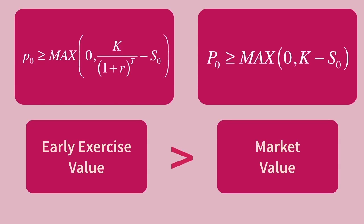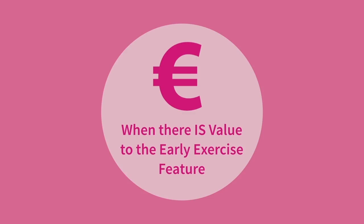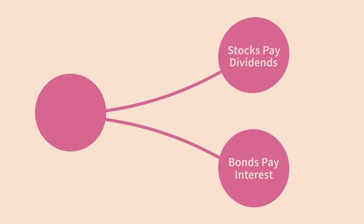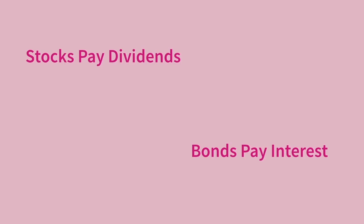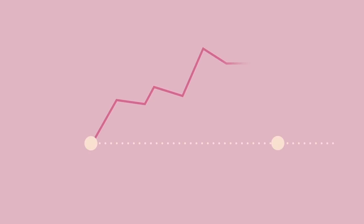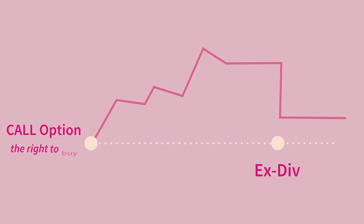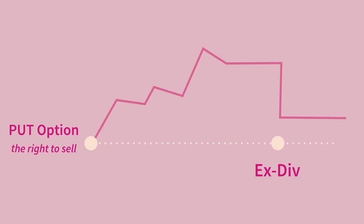Stocks pay dividends, bonds pay interest, and some assets have carrying costs — that is the key. Dividends and interest encourage the early exercise of a call option, while carrying costs encourage early exercise of a put option. When a stock pays a dividend, its price falls simultaneously. With an American call option, we can exercise right before the dividend, buying at the contract price and selling at the market price before the drop eats into profits. For a put option, it would not be worthwhile to exercise early — it is more valuable to wait until after the dividend is paid to capture the price drop in the put's payoff.